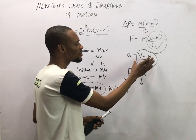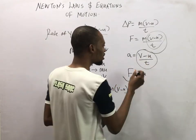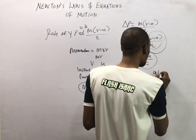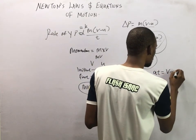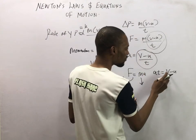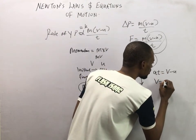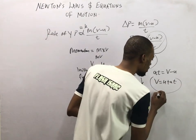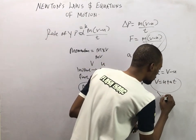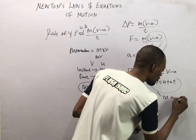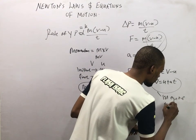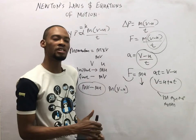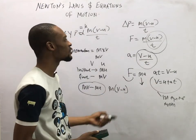Remember, acceleration equals change in velocity over time. If we cross-multiply, a×t equals v minus u, so v equals u plus at. And this is the first equation of motion: v = u + at.